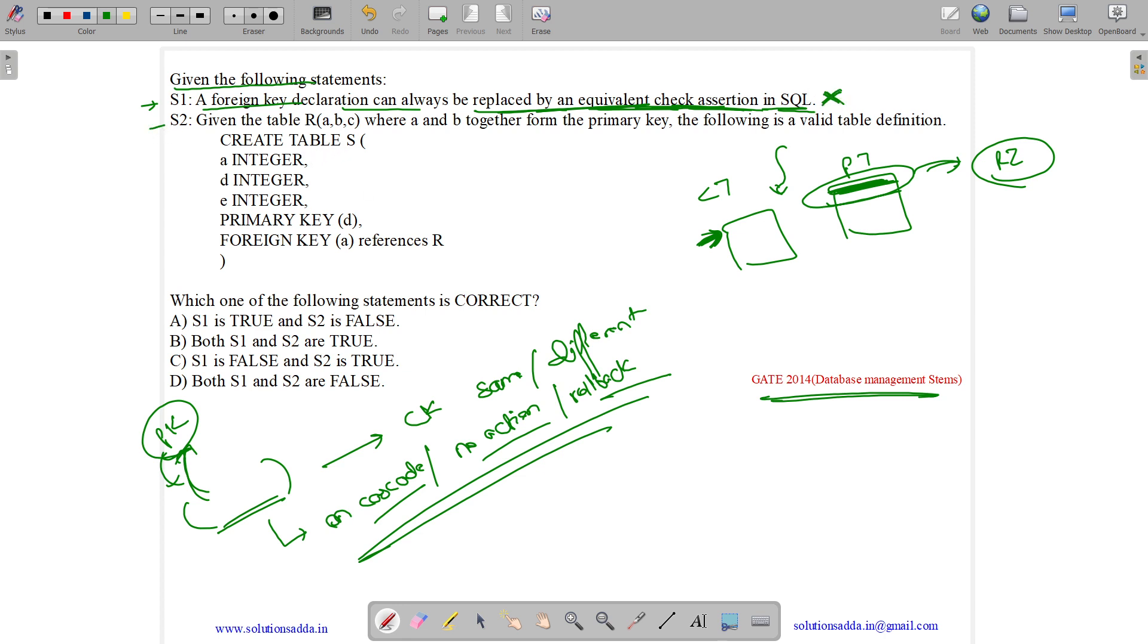Now S2 states, given the table R(A,B,C) where AB together forms a primary key. So AB is the primary key. The following is a valid table definition. Let us see: CREATE TABLE S ( A INTEGER, D INTEGER, E INTEGER, PRIMARY KEY (D), FOREIGN KEY A REFERENCES R.